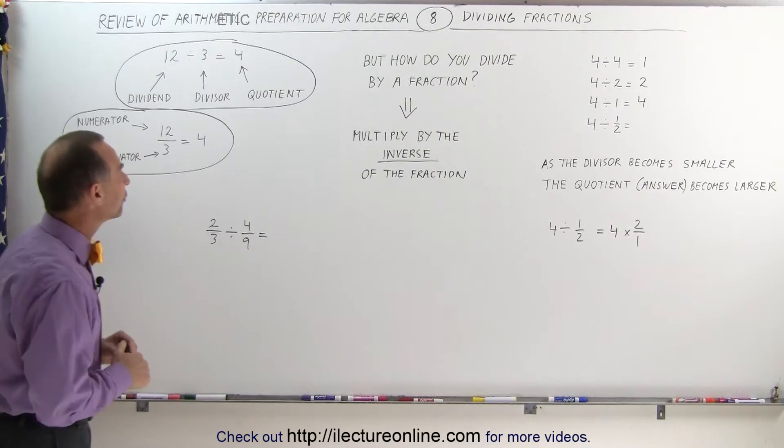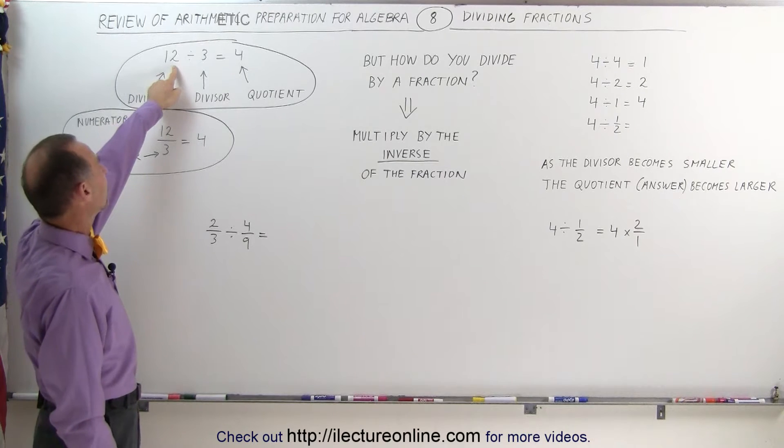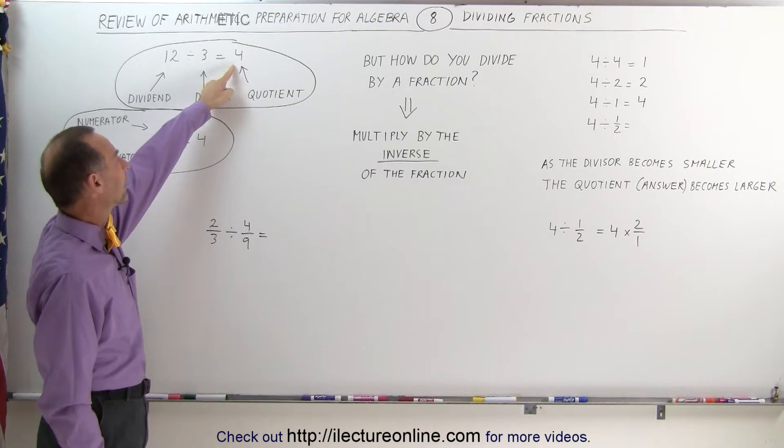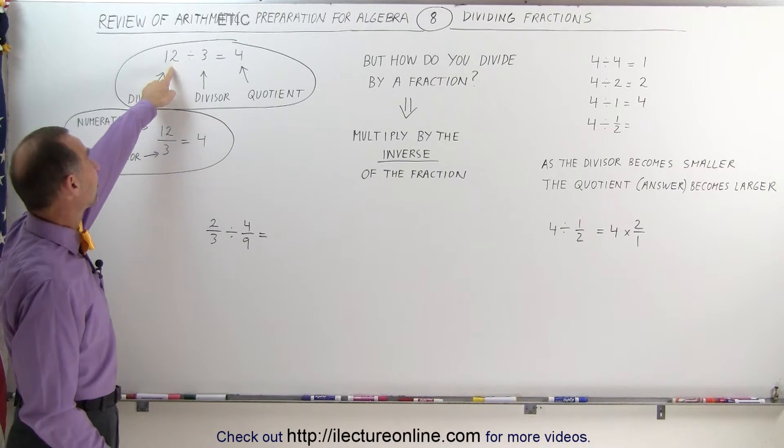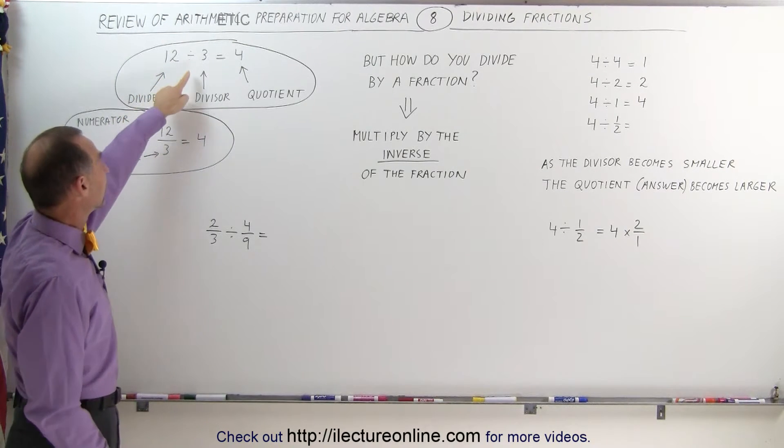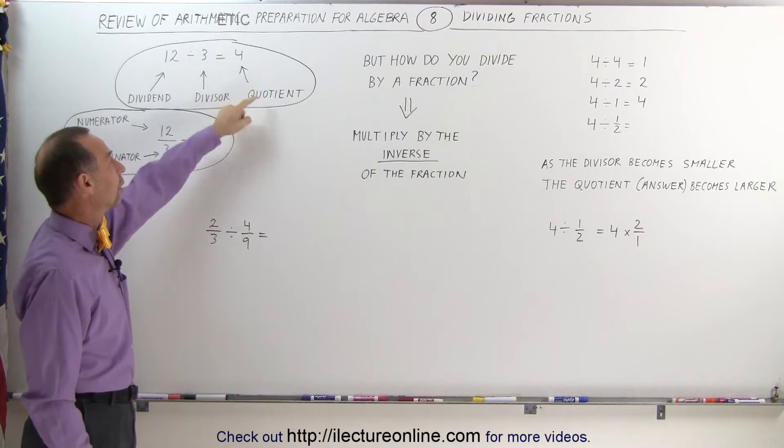So let's go and review a few things here. Notice that here we have a simple division. We're dividing one integer by another integer, and we get the result. The number we're dividing is called a dividend, the number we're dividing by is called a divisor, and the answer is called a quotient.